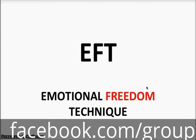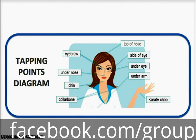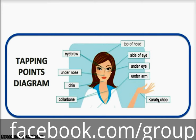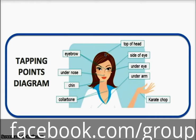I'd like to share with you a picture of all the tapping points, and I will also be uploading this picture in the file section of the Facebook group. Basically, you start with the karate chop point, using two fingers tapping on it. Then you tap on the beginning of the eyebrow, the side of the eye, under the eye, under the nose, under the chin, on the collar bone, and then on the top of the head. If you have seen some of my videos where I do this tapping, you will be able to identify these points and follow along.